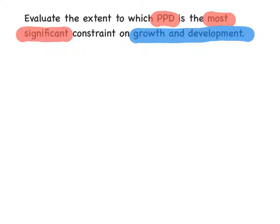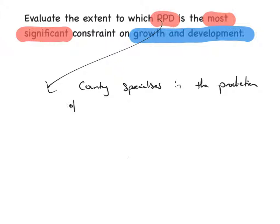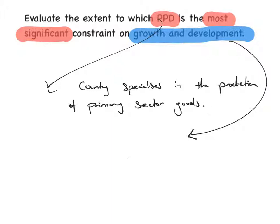In the introduction I need to set out what primary product dependency is. To my mind, that's just where a country specializes in the production of a narrow range of goods in the primary sector. I also need to distinguish between growth — which is an increase in real GDP — and development, which is a broader measure of quality of life and standard of living.